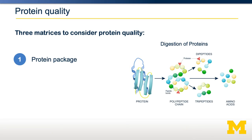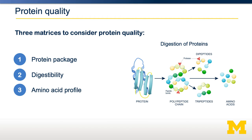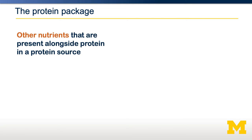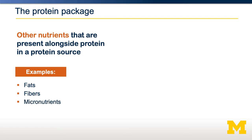There are three matrices by which you might want to consider protein quality. One is the protein package, one is how digestible it is, and the third is which amino acids are present in a protein. The protein package refers to the other nutrients that are present alongside protein within a protein source. For example, this could be fats, fiber, or micronutrients.